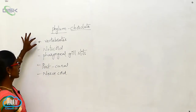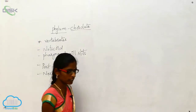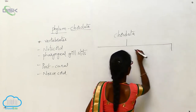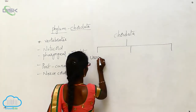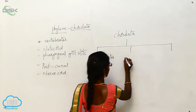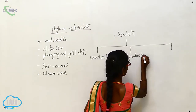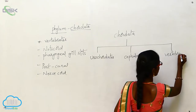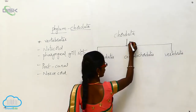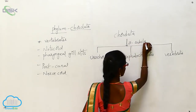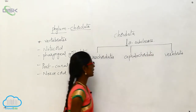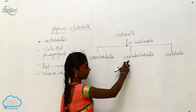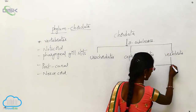In vertebrates, some classifications are there. Chordata is classified into three subclasses: that is Urochordata, Cephalochordata, and Vertebrata.